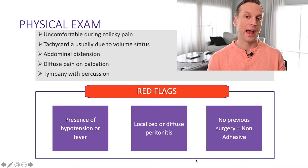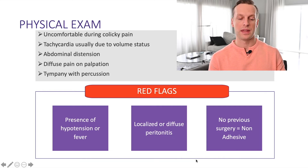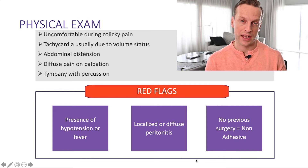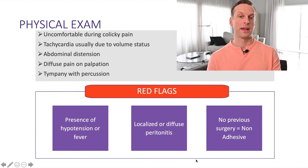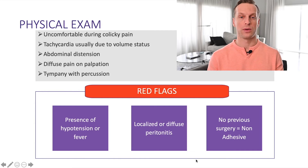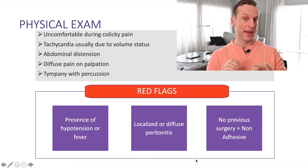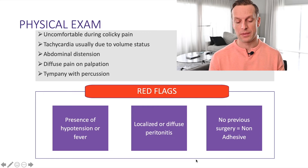When examining someone who might have a bowel obstruction, you'll notice a few things. They may be uncomfortable during a colicky episode of pain. They might have tachycardia because they've been vomiting, are dehydrated, and haven't been able to eat. They will usually have some abdominal distension and diffuse pain on palpation. These patients are also typically quite tympanic, because the intestinal tract is full of gas and distended.